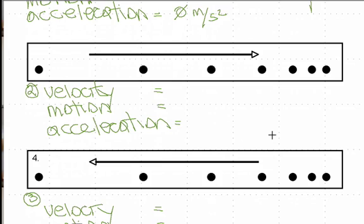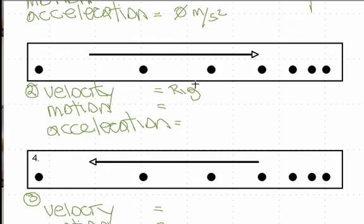Here is the second case. Right away you can see the space between the dots is decreasing as we go in the direction of the arrow, so we know the velocity is not constant. The arrow is pointing to the right, which means the velocity vector is pointing to the right.